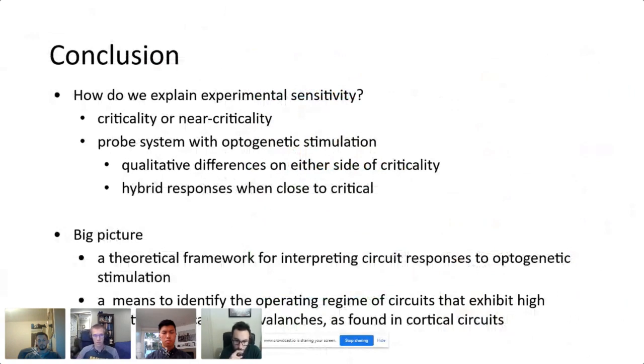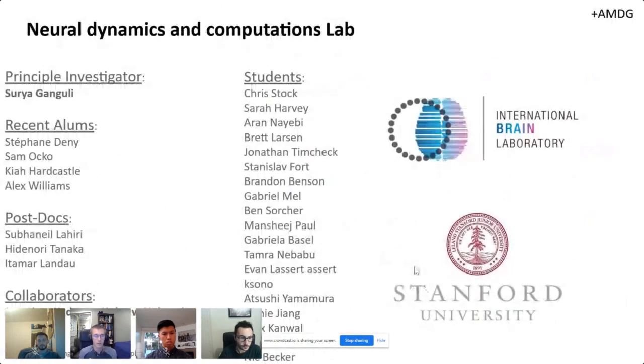Ultimately we wanted to explain this experimental sensitivity. You could do that with criticality, but we've gone beyond that. We can show near criticality. If you probe the system with optogenetic stimulation, then you see these qualitative differences on either side of criticality and you see hybrid responses close to criticality. Ultimately we show here a theoretical framework for interpreting circuit responses to optogenetic stimulation and a means to identify the operating regime of circuits that exhibit high sensitivity or scale-free avalanches as found in cortical circuits. Thank you to you and to my lab, ad maiorem Dei gloriam.